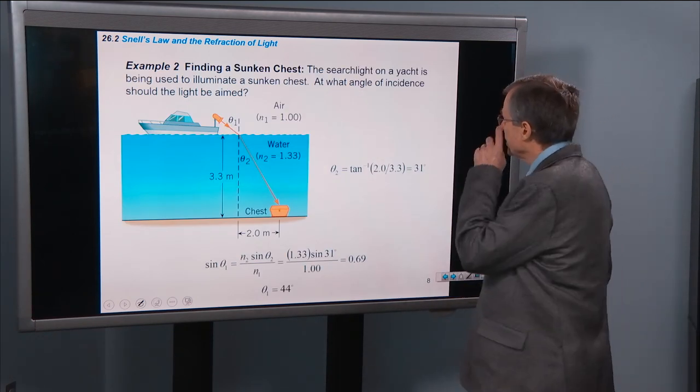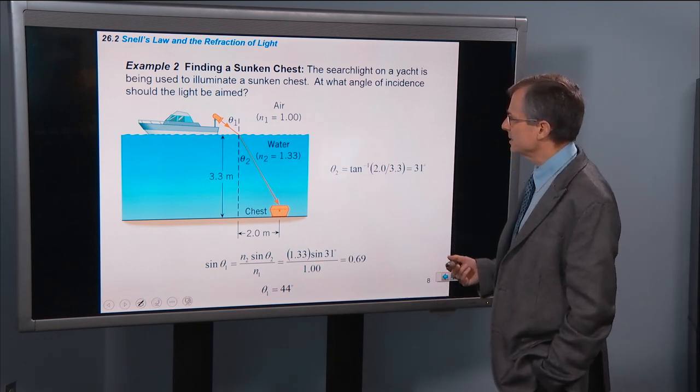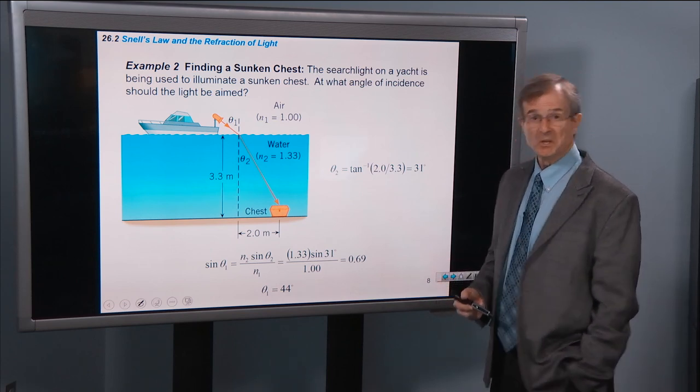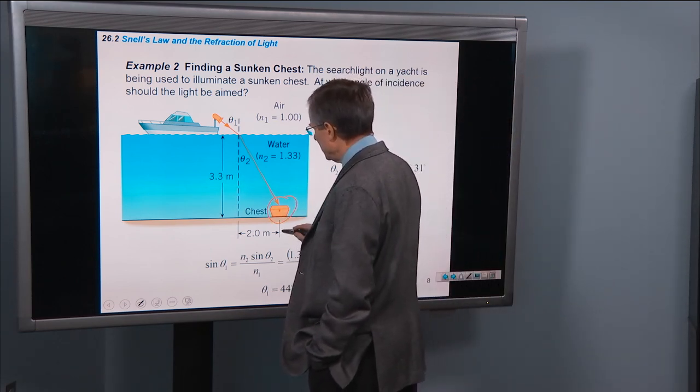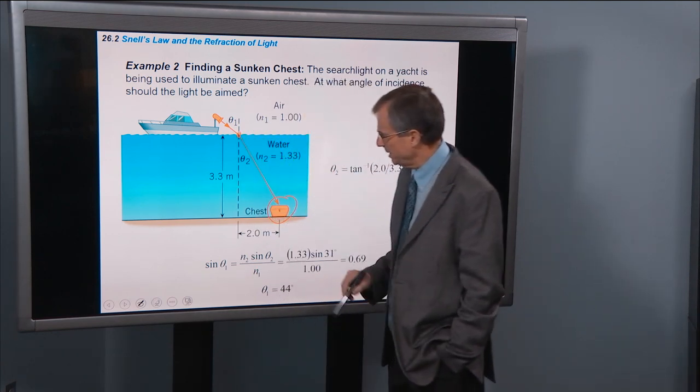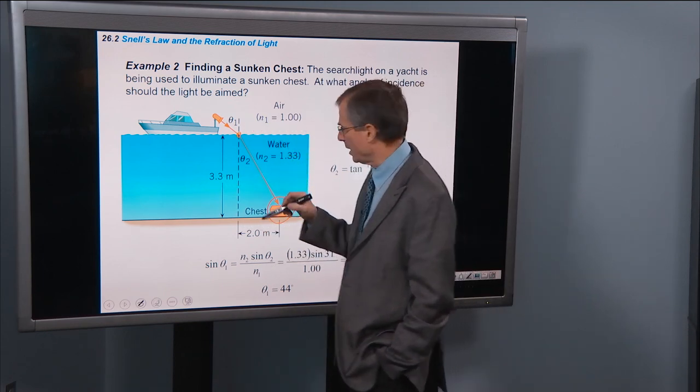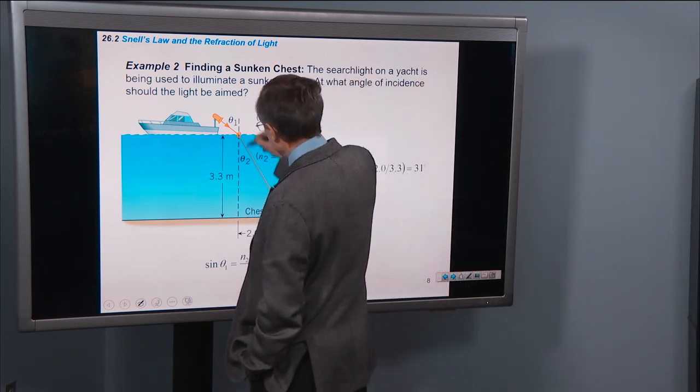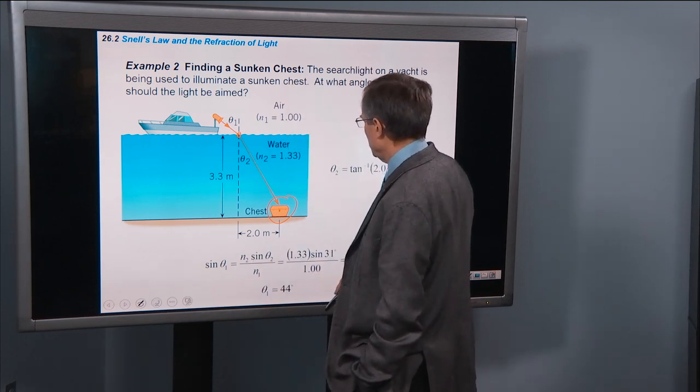Finding a sunken chest. Search light on a yacht is being used to illuminate a sunken chest. At what angle of incidence should the light be aimed? Good question. Here's the chest. We know its location, two meters from this point at which the light enters the water, two meters horizontally from the point at which the light enters the water, and then 3.3 meters deep. And we want to illuminate it with this light.